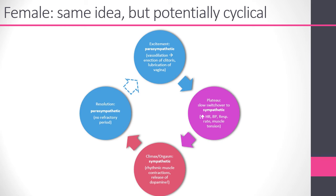The female has the same idea, but there are a couple of differences. The first is that the parasympathetic phase blends slowly into a sympathetic phase through a long plateau that has a slow switchover to sympathetic control. The heart rate increases, blood pressure increases, and respiratory rate and muscle tension all increase — the woman just becomes more and more physically excited. But before that happens, we have the parasympathetic phase: vasodilation leads to erection of the clitoris and lubrication of the vagina.